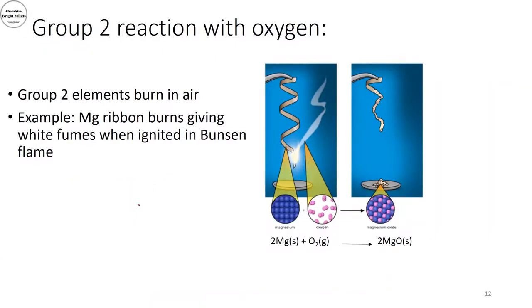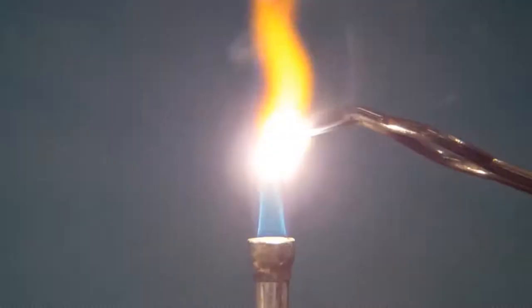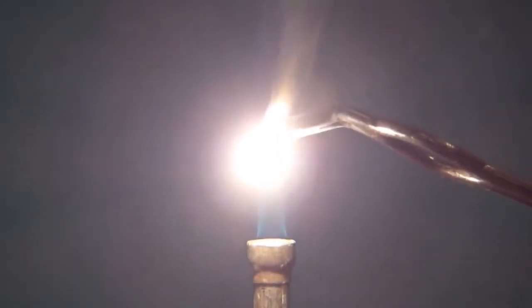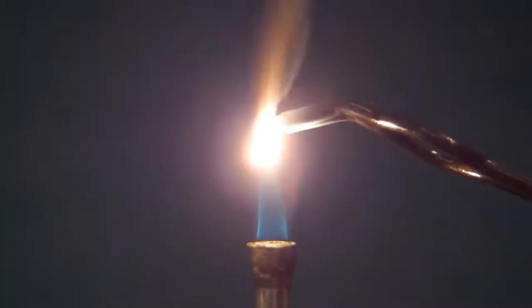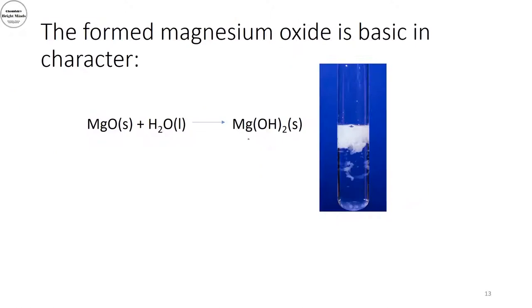If we look at the group 2 reaction with oxygen: if we ignite a magnesium ribbon in the presence of oxygen using a Bunsen flame, white fumes are formed. Magnesium reacts with oxygen in air to give magnesium oxide, which has a basic character. When it dissolves in water, it gives magnesium hydroxide — visible as a milky color — which is slightly soluble in water.